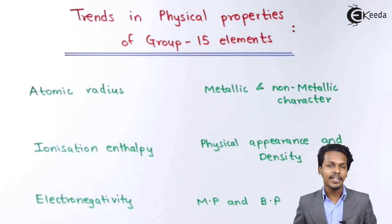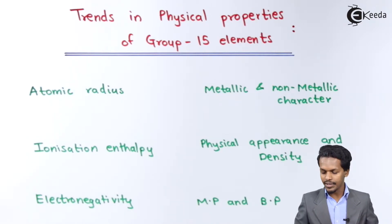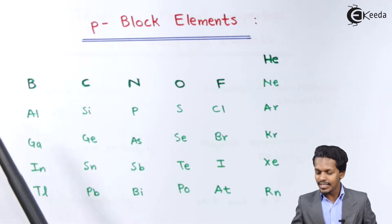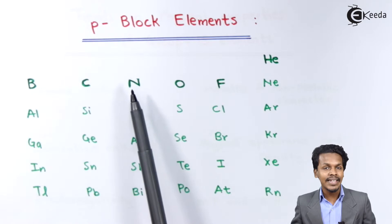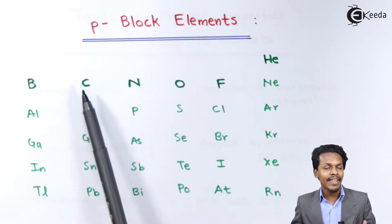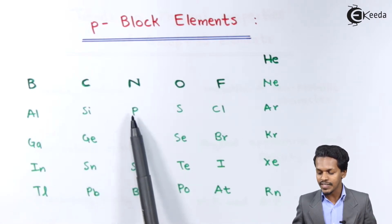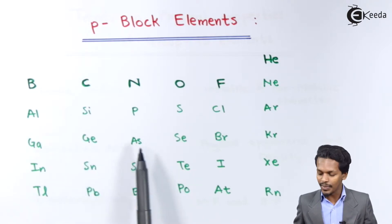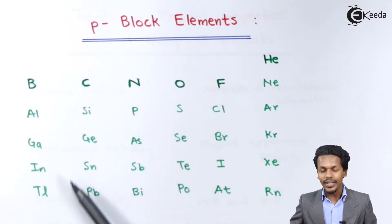Starting with the first one — atomic radius. If we compare the group 15 elements with group 14 elements: as we move across a period, the atomic size decreases. So nitrogen will have a smaller atomic size than carbon, phosphorus will have a lesser atomic radius than silicon, and arsenic will have a lesser atomic radius than germanium.